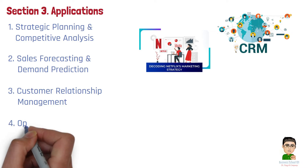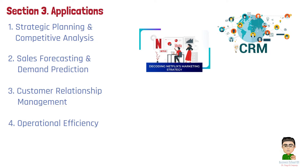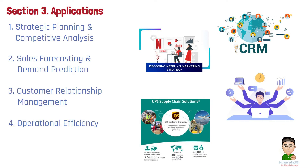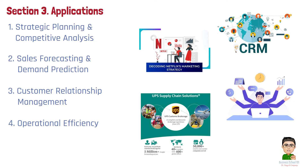Number 4: Operational efficiency. Managers use data analytics to identify and eliminate inefficiencies in operations, leading to streamlined processes, reduced costs, and improved productivity. Enhanced efficiency directly contributes to a company's bottom line. For example, UPS uses data analytics to optimize delivery routes, reducing costs and improving service reliability by analyzing traffic patterns and fuel consumption.